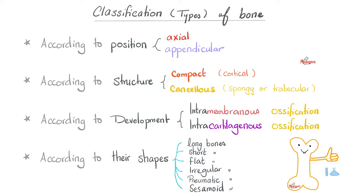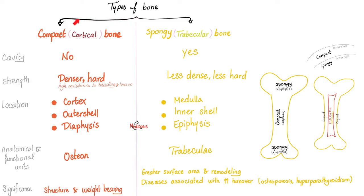Let's review one classification: compact bone versus spongy bone, depending on their structure. Compact is the same as cortical; spongy is the same as trabecular or cancellous. The outer shell of the bone is usually compact; the inner part is usually spongy. The diaphysis or shaft has more compact bone, but the epiphysis has more spongy bone — because it needs to be less hard and slightly more flexible in order to articulate with the next bone at the joint.